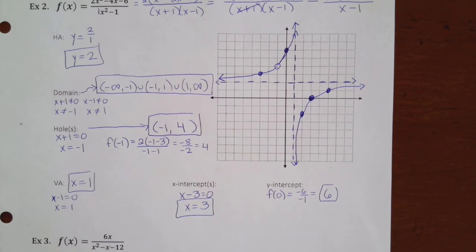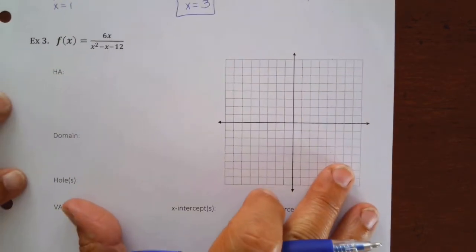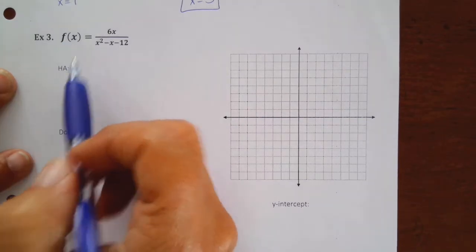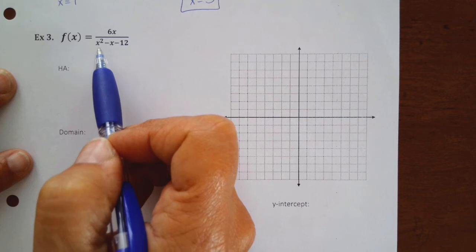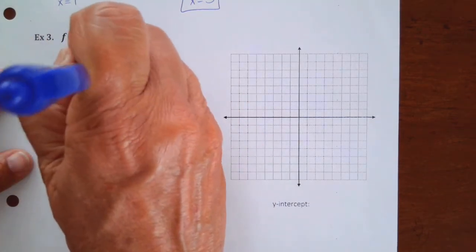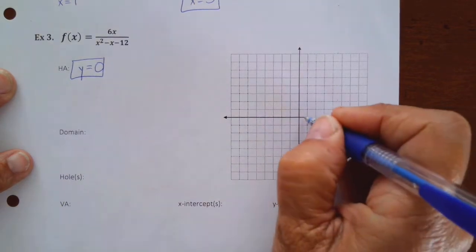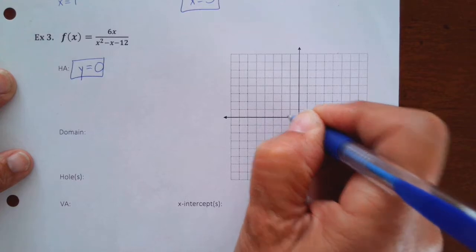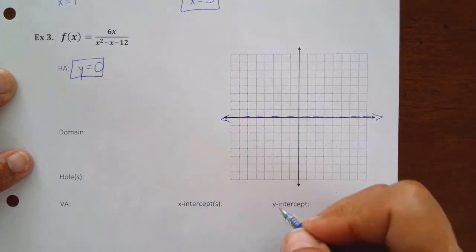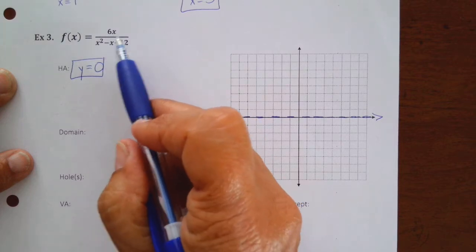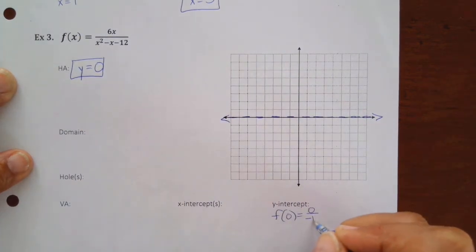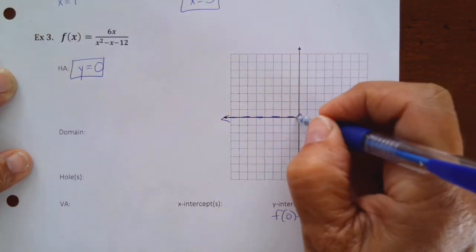Now let's do example three a bit quicker. Remember your horizontal asymptote comes from the original problem. The degree in the bottom is bigger — it's x-squared — and the top is just x to the first. So when it's bottom heavy, the horizontal asymptote is always y equals zero. You don't have to do any work. The ends of your graph are going towards zero. For the y-intercept: if x is zero, the whole numerator is zero, so f(0) = zero over negative twelve, which is just zero.